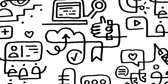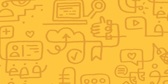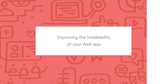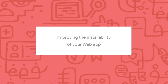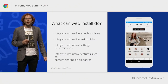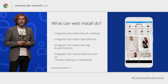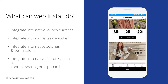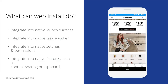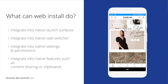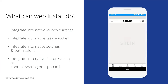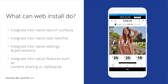Here's a summary of how Web Install is different from bookmarks. Web Install offers users access to the web from familiar discovery and launch surfaces for their device. Installed web apps can be standalone — that means they can be separate from the browser — and they can be integrated into the native task switcher.